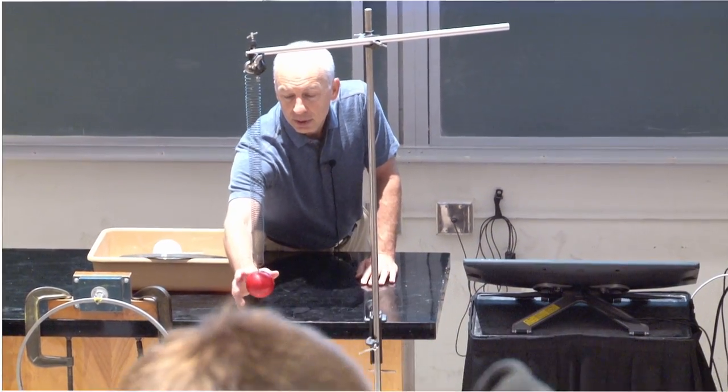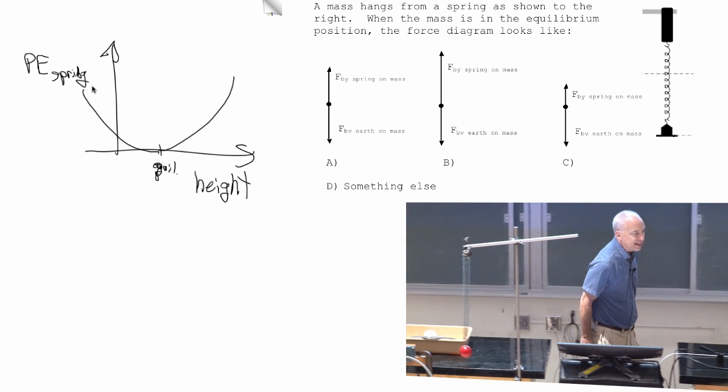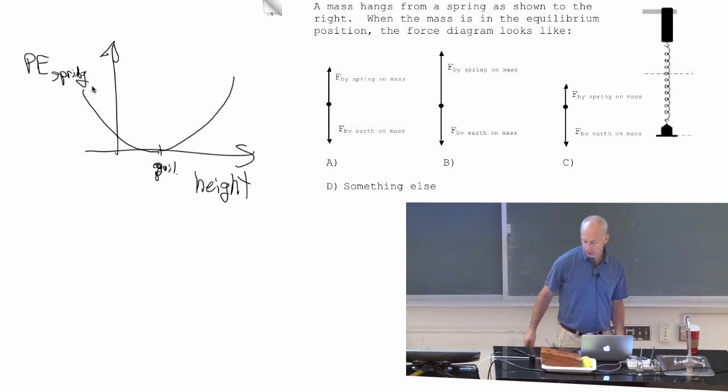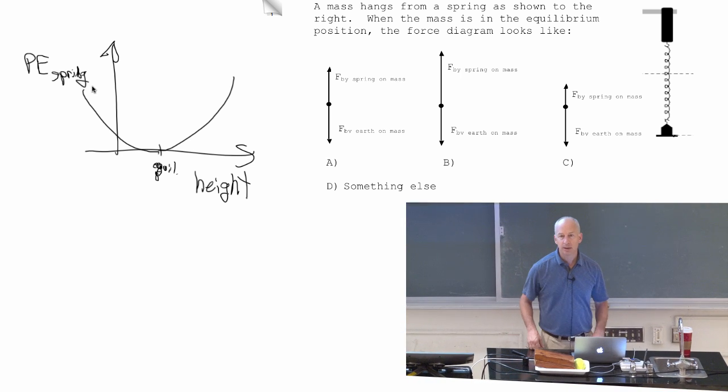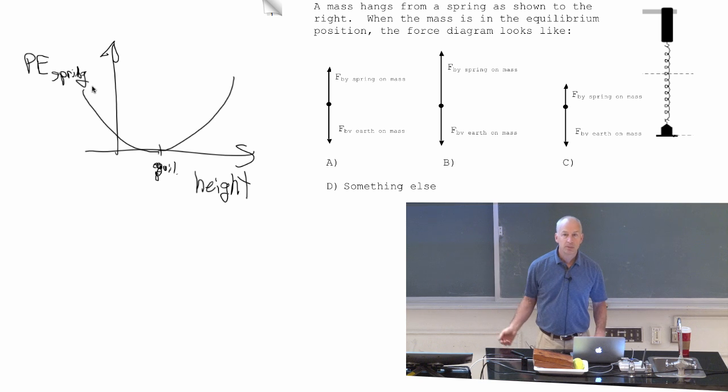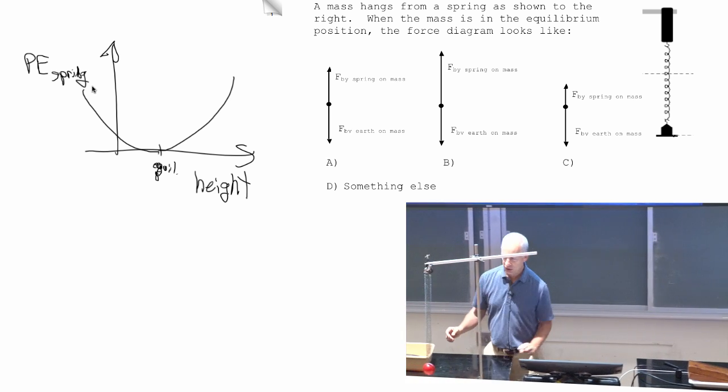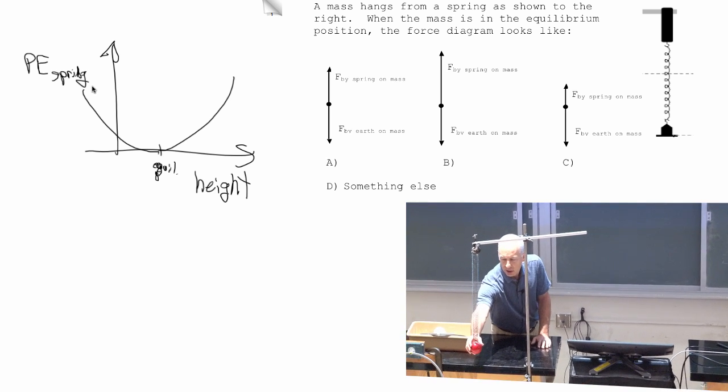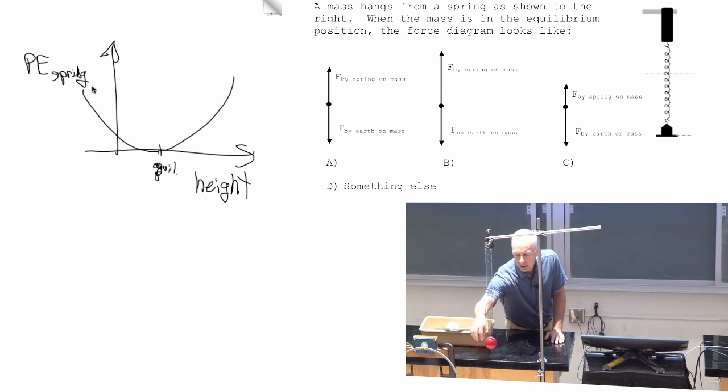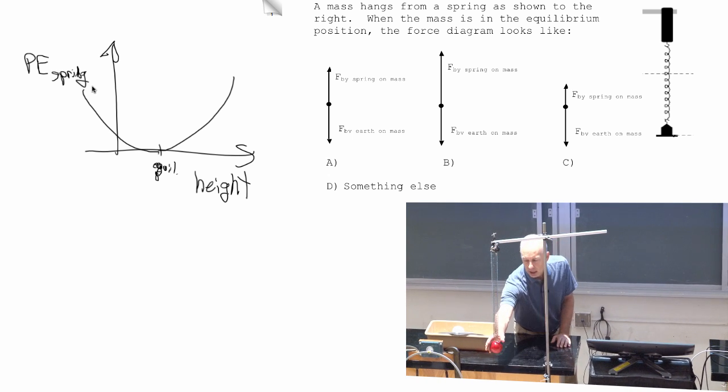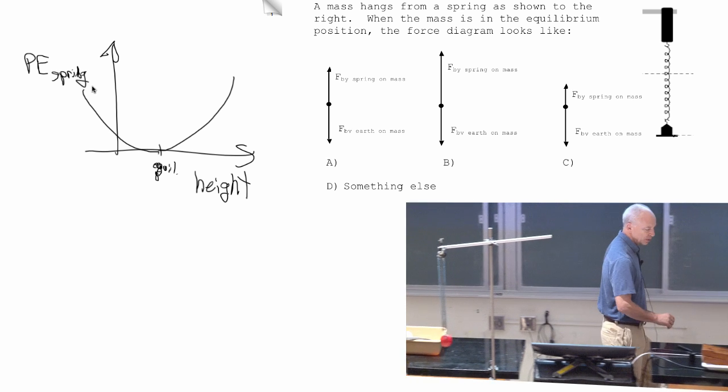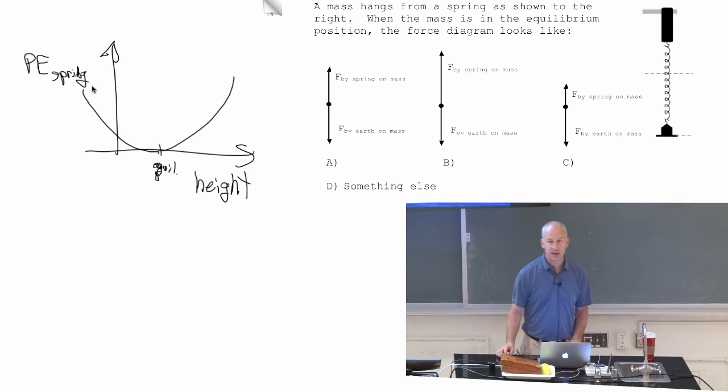And so when you're exactly at equilibrium, the stretch of the spring is the same whether the object is moving or not. At the equilibrium point, there is a stretch to the spring, and so there is a force upward by the spring and a force downward by the earth. And it doesn't matter whether it's moving through the equilibrium point or not. That is still true.